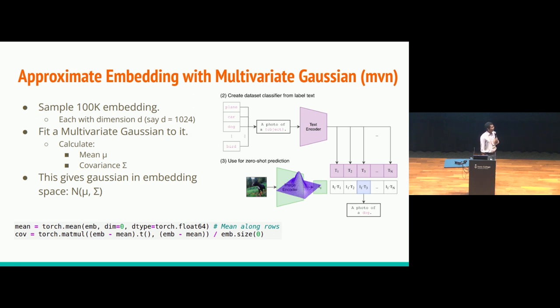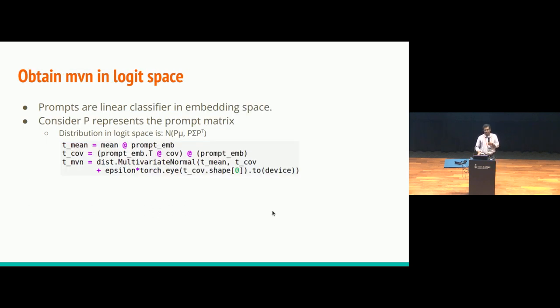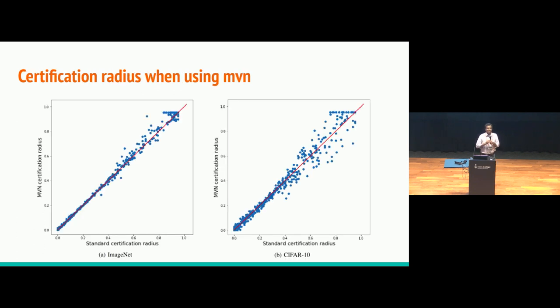And now, we sample the embedding from this multivariate normal distribution and we certify for the specific input. And here, we can do something better because we need to multiply this with the prompt embedding, which is a linear multiplication. So instead of having this multivariate normal in the embedding space, we can directly translate it to the logit space and we can sample from there. And this will give us exactly the same result. We did that and we saw this plot. Again, on the x-axis, we have the actual certification using randomized smoothing. And on the y-axis, we have multivariate normal.